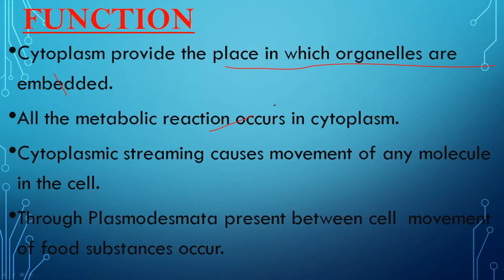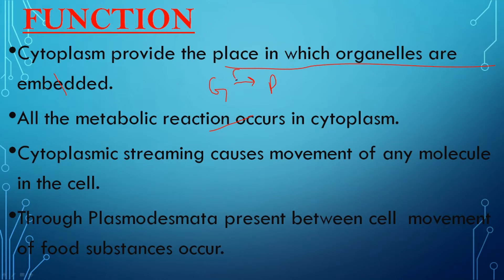Second, all the metabolic reactions occur in the cytoplasm. To relate this, recall from class 10th respiration: glucose first breaks down into a three-carbon molecule — that is pyruvic acid — and this process is called glycolysis, and it occurs in the cytoplasm. So most of the chemical reactions occurring in the cell take place in the cytoplasm.